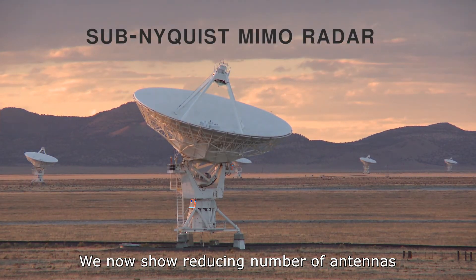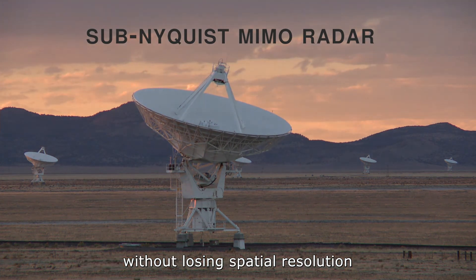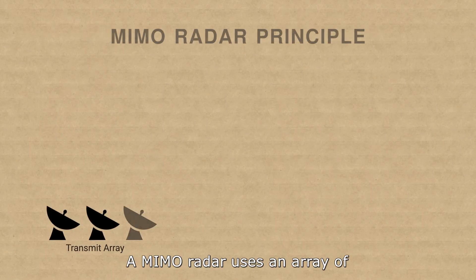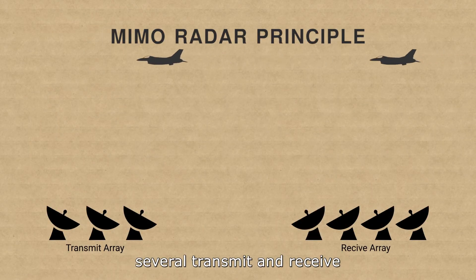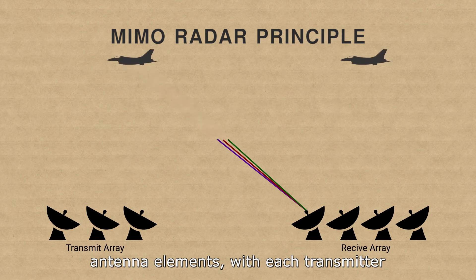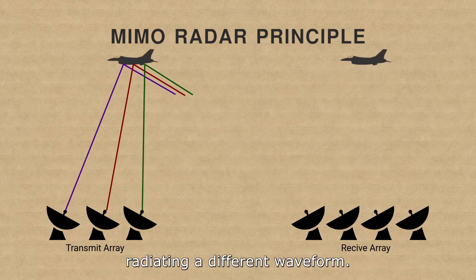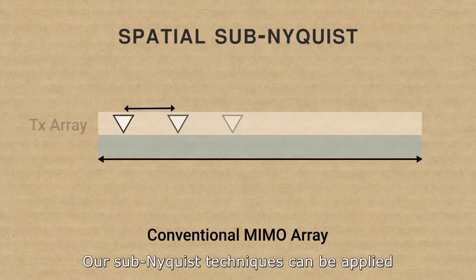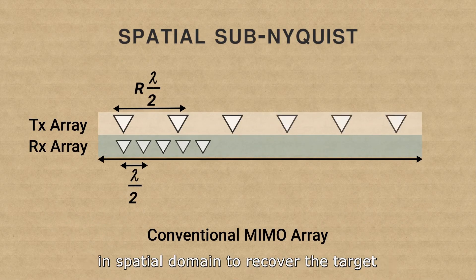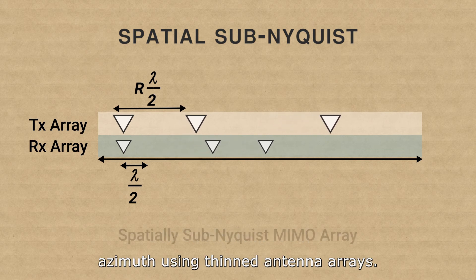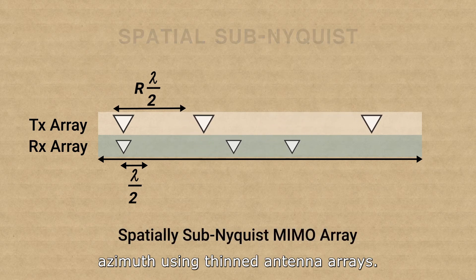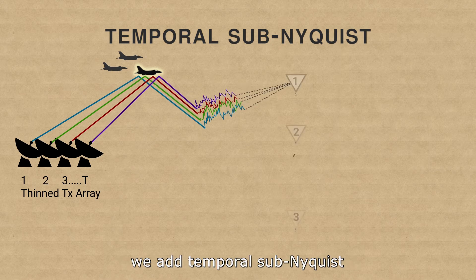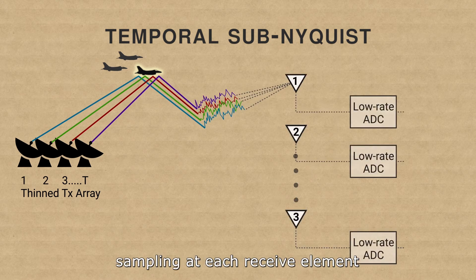We now show reducing the number of antennas without losing spatial resolution in a multiple input multiple output radar. A MIMO radar uses an array of several transmit and receive antenna elements with each transmitter radiating a different waveform. Our sub-Nyquist techniques can be applied in the spatial domain to recover the target azimuth using thinned antenna arrays. To this spatial sub-Nyquist MIMO, we add temporal sub-Nyquist sampling at each received element.